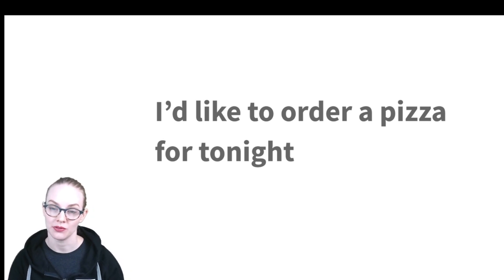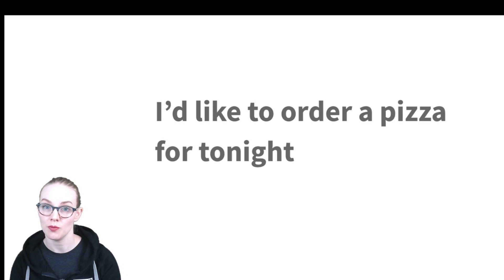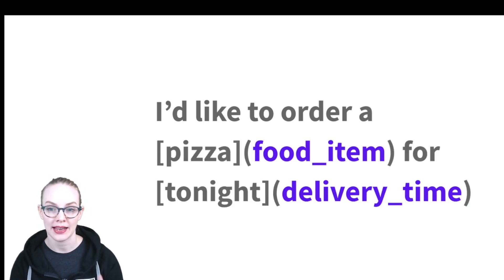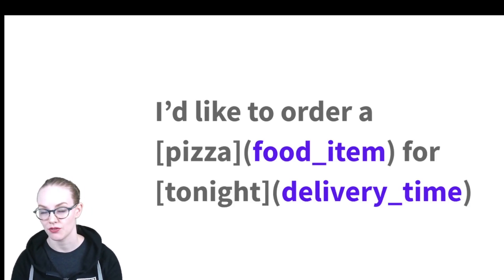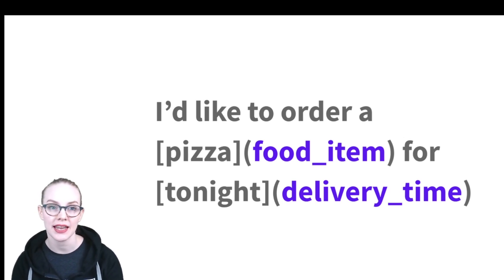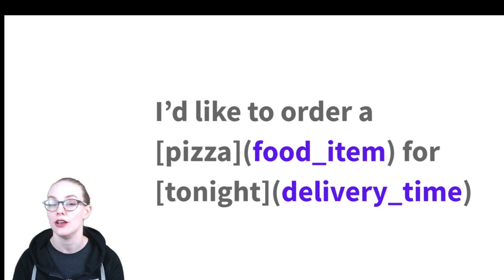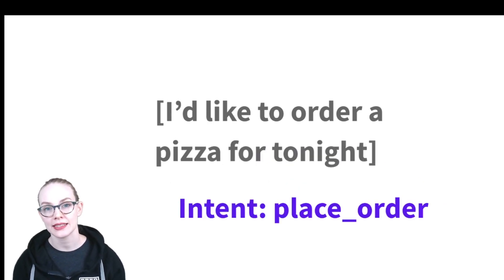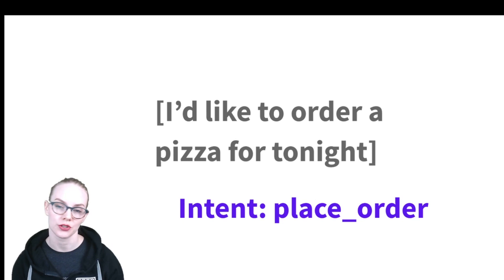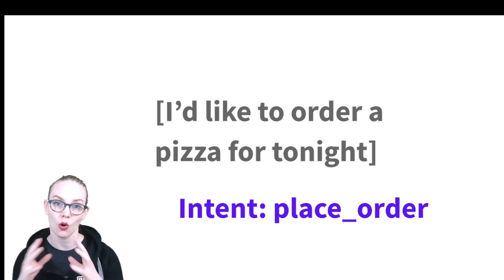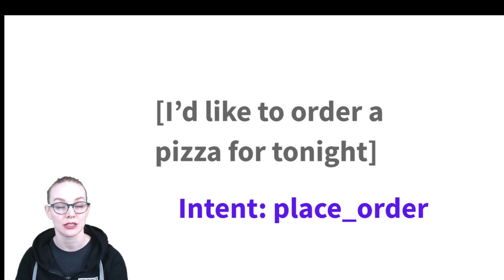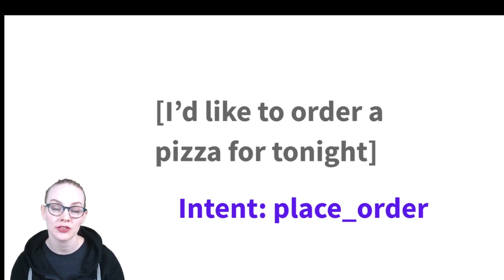So if we have this piece of language data — 'I'd like to order a pizza for tonight' — some ways that you might annotate this: you might identify that 'pizza' is a food item and that information is important for your system to handle, or that 'tonight' is the delivery time and you want to maintain that information. Or you might annotate on a larger scale, saying this whole statement is part of an intent and this person is placing an order.